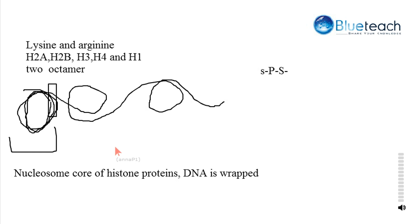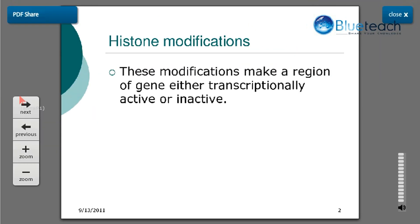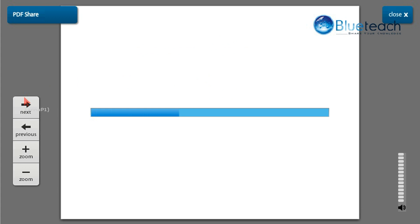The histone proteins have the same primary structure. But they undergo certain chemical modifications as a result of which they either promote transcription or inhibit transcription. These modifications make a region of a gene either transcriptionally active or inactive.